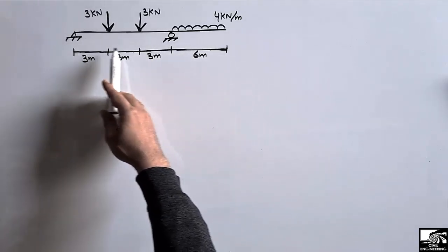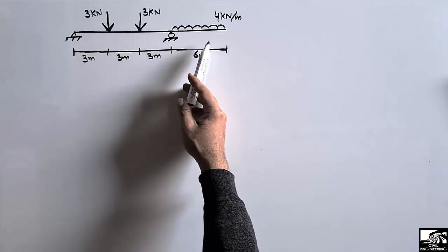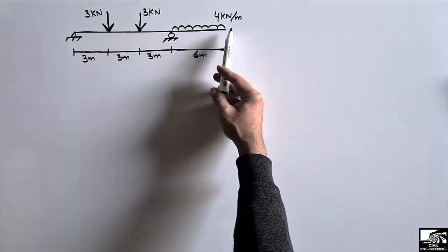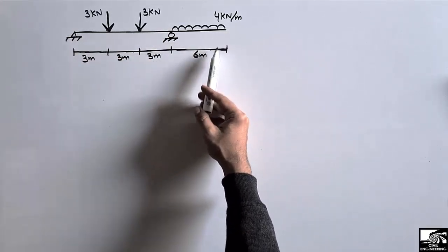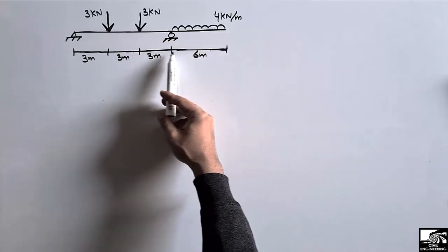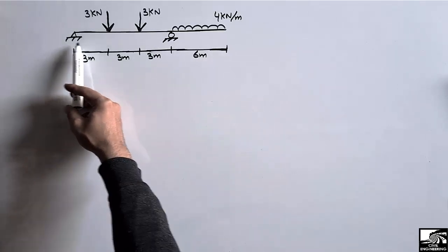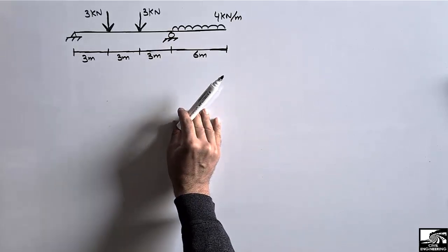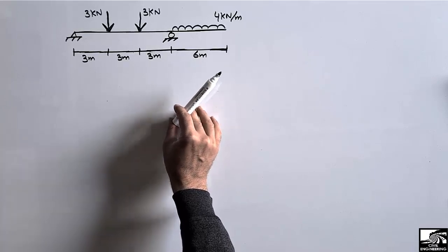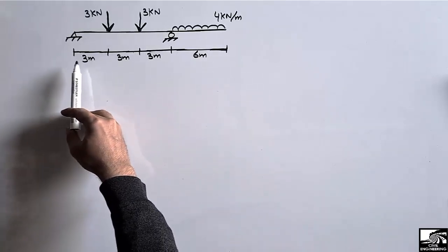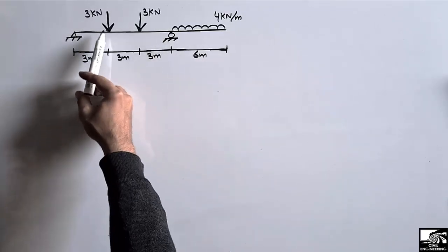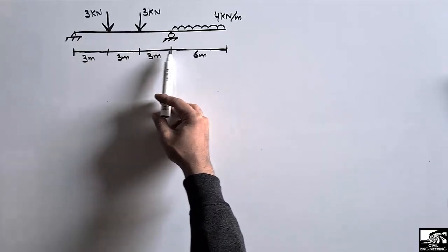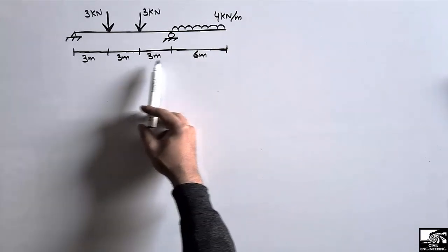In this lecture we are going to find out the support reactions for this beam and draw the shear force and bending moment diagram. This beam has two point loads of 3 kilonewton and one uniformly distributed load of 4 kilonewton per meter over the overhanging portion of the beam, distributed over a length of 6 meters. This is the simply supported part and this is the overhanging portion. The first load acts at 3 meters, the other load at 6 meters from this end, and the total length of the beam is 15 meters.